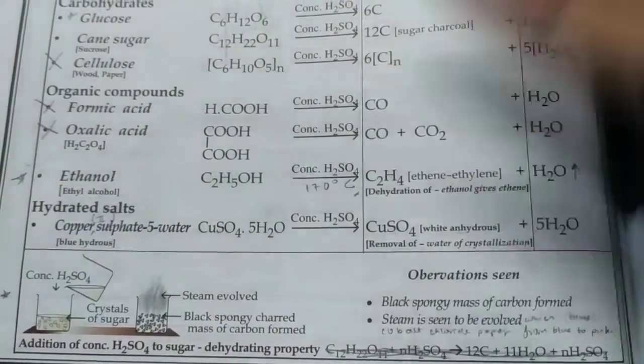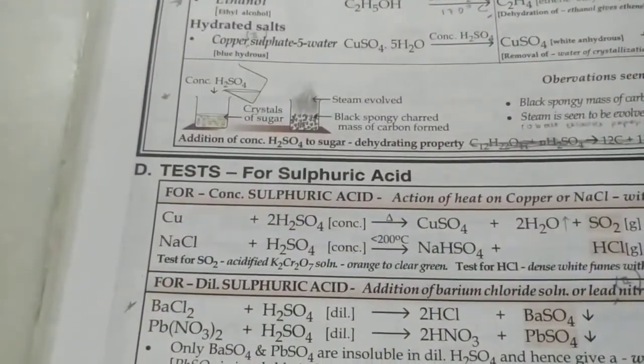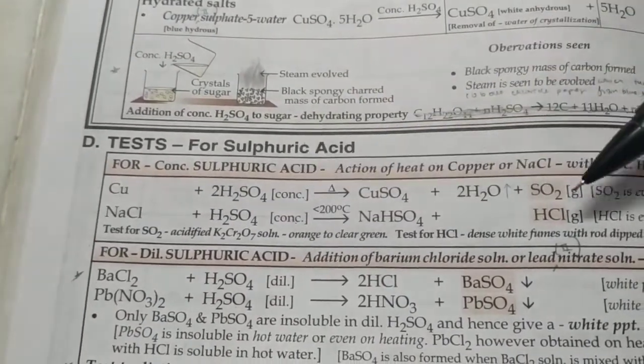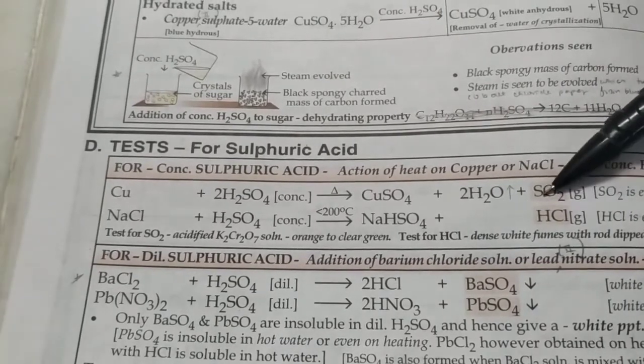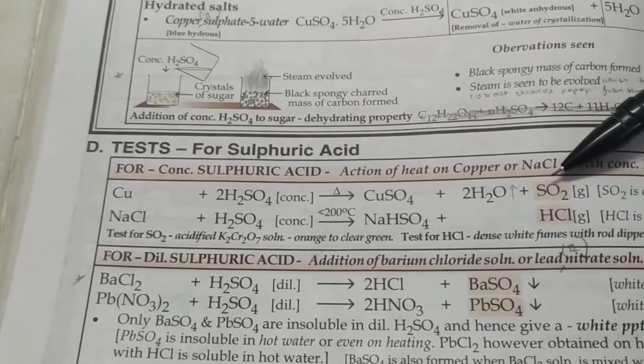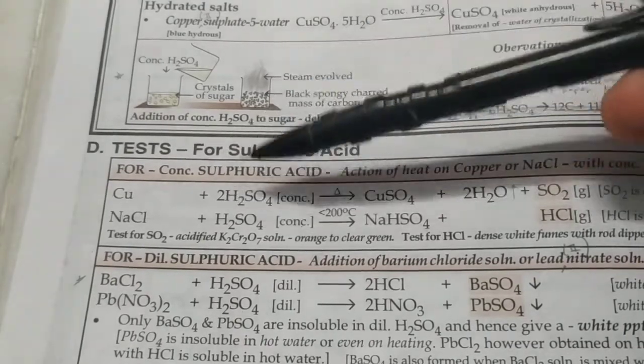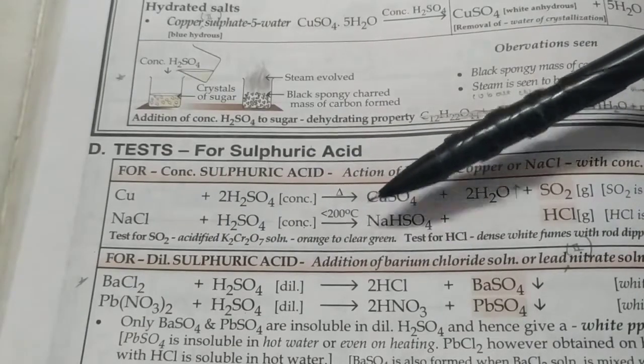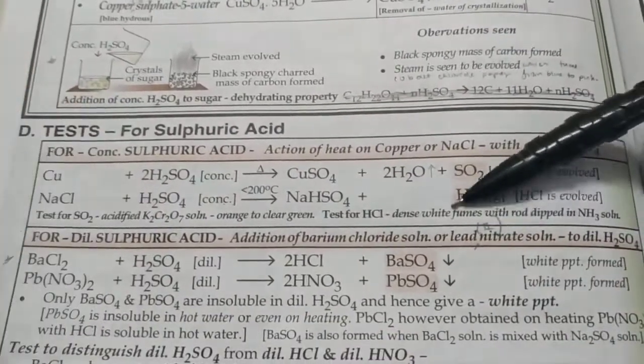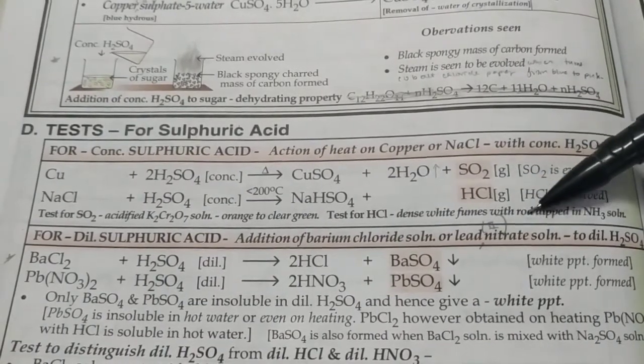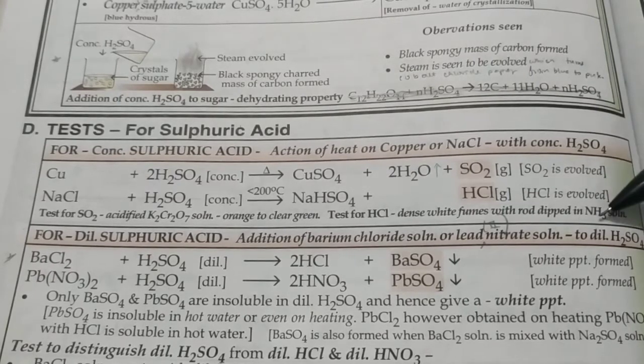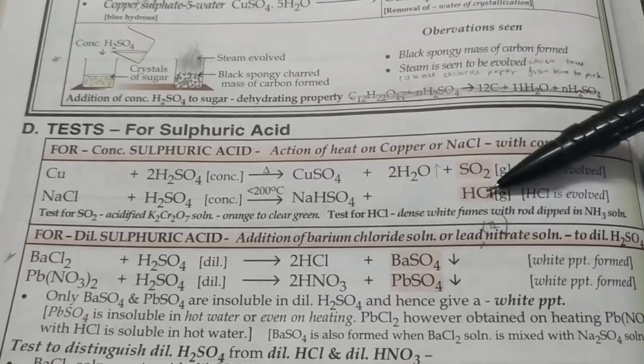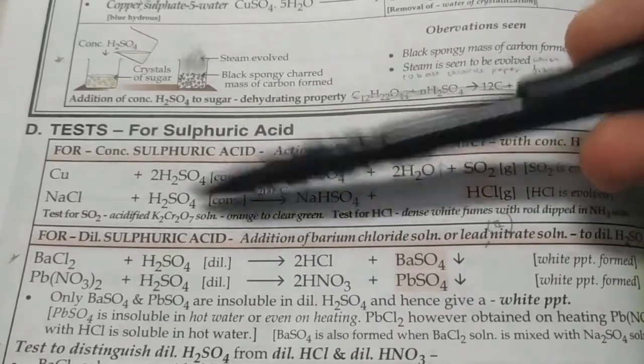What are the tests for sulfuric acid? For conc sulfuric acid we have two tests. Either you react it with copper and you will see sulfur dioxide gas is being evolved, and the test for this gas is it will turn acidified potassium dichromate solution orange to clear green. Another test: react it with sodium chloride or potassium chloride at less than 200°C and you will see a gas released, and this gas will show dense white fumes with rod dipped in ammonia solution. The dense white fume is ammonium chloride. This proves the beaker had conc sulfuric acid.